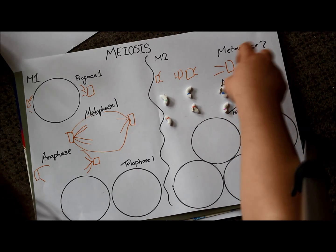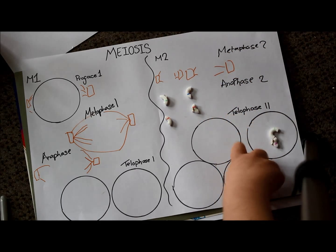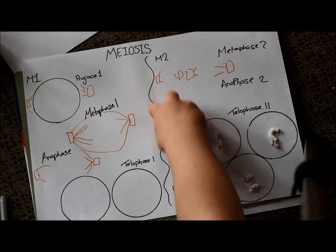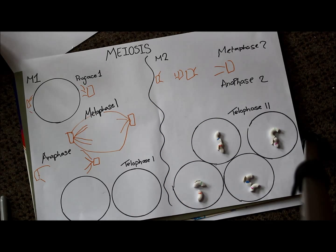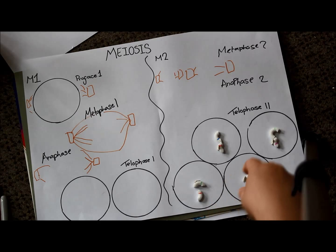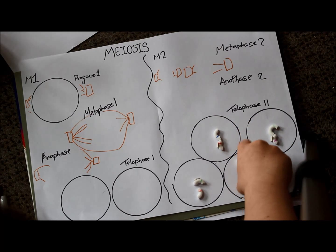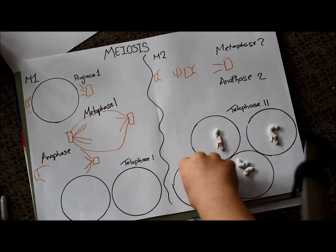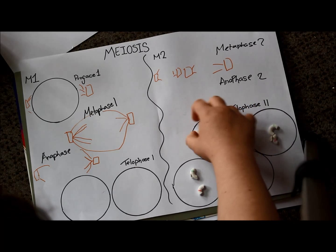Telophase two then occurs, and we end up with four daughter cells. And these cells are haploid. They have half the amount of DNA as a normal cell would. And if you'll notice they each have a fairly unique makeup of alleles in them.